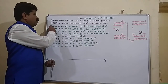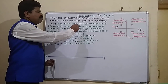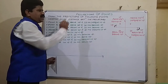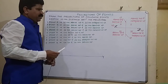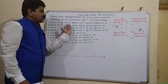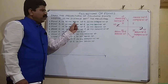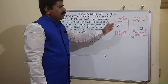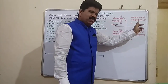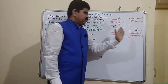The first point: point A is 15 millimeter above HP and 25 millimeter in front of VP. By reading the statement, the student should understand the position in the quadrant. It is above HP and in front of VP, which means it belongs to the first quadrant.